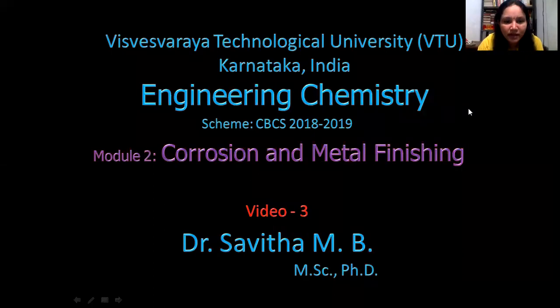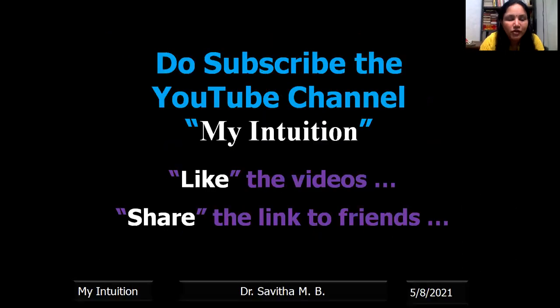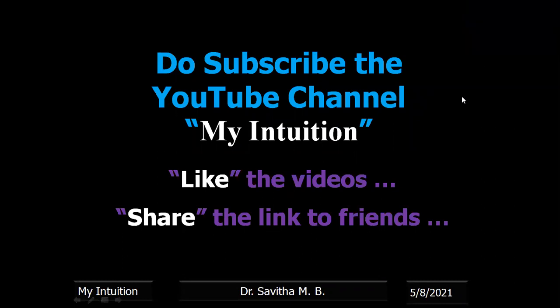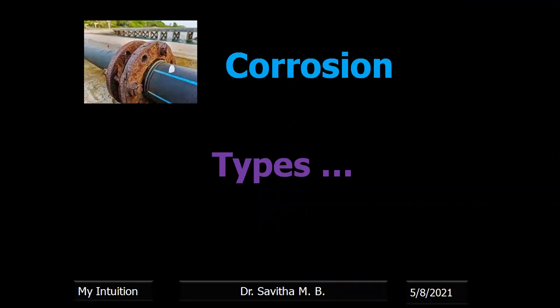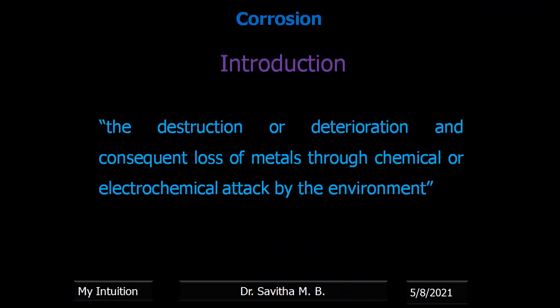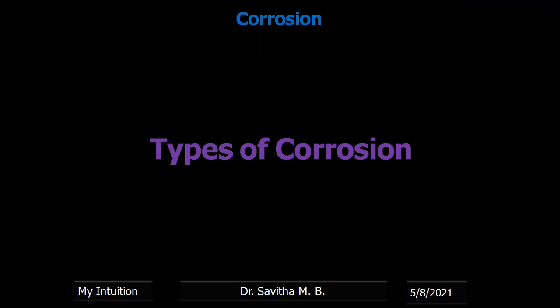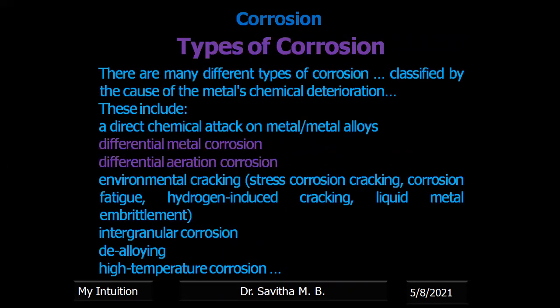Hello everyone, this is Dr. Savita M.B. speaking in continuation with the corrosion science and metal finishing. This is my third video where I will be discussing the types of corrosion. Corrosion, as we have already discussed, is the destruction of the metal and loss of the metal through environmental attack. Types of reactions of corrosion we discussed in our previous video. Now, mainly there are two types of corrosion: differential metal corrosion and differential aeration corrosion. There is also stress corrosion, but here I will be discussing more on differential metal corrosion and differential aeration corrosion.